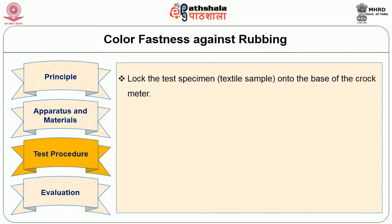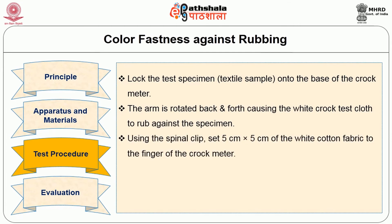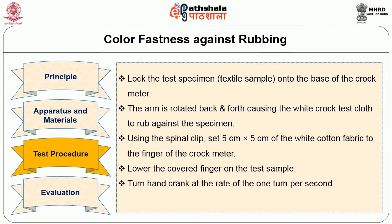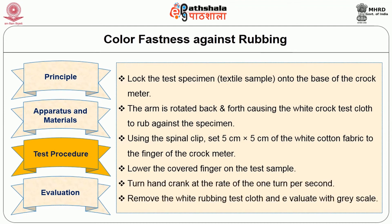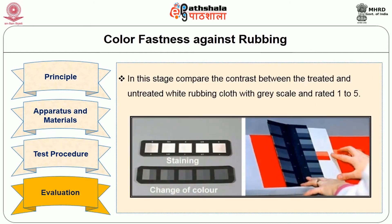Test procedure: lock the specimen onto the base of the crockmeter. The arm is rotated back and forth, causing the white crock test cloth to rub against the dyed fabric. Using the spiral clip, attach a 5 cm x 5 cm piece of white cotton fabric to the finger of the crockmeter. Lower the covered finger on the test sample and turn the hand crank at the rate of one turn per second, subjecting it to crock testing. Remove the white rubbing test cloth and subject it to evaluation using grayscale. In the evaluation stage, compare the contrast between the treated and untreated white rubbing cloth with the grayscale and rate them 1 to 5.